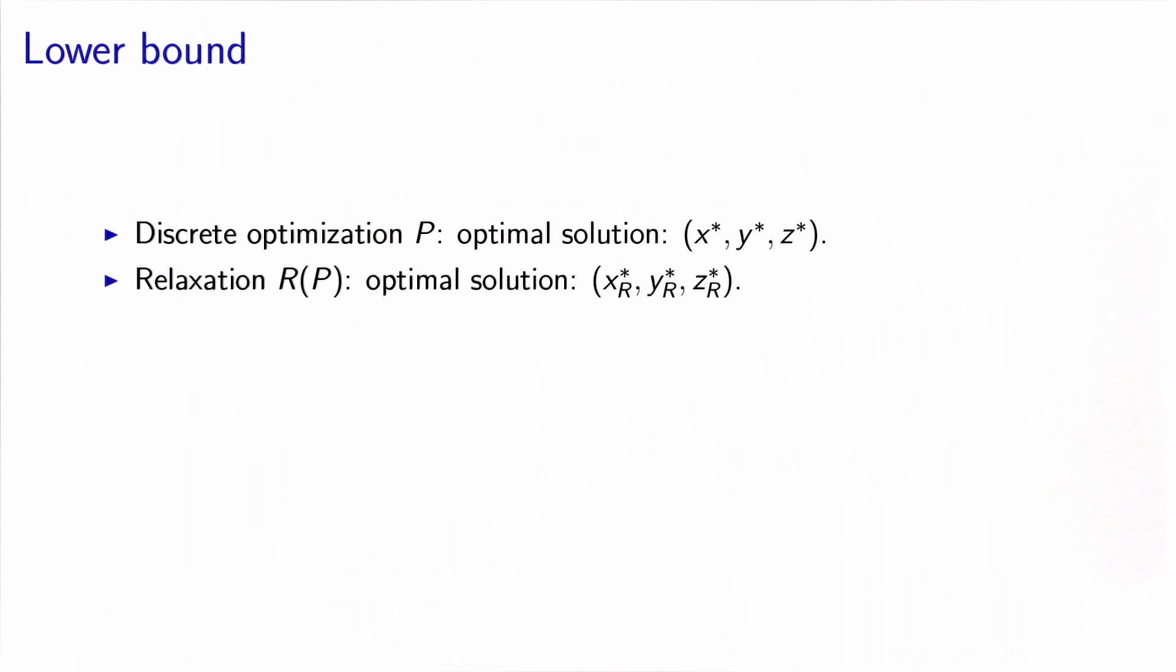The relaxation is extremely useful because it provides us with a lower bound on the optimal solution of the problem. So let's call P our original discrete optimization problem, and let's call x*, y*, z* its optimal solution. We call R(P) the relaxation of the problem, and its optimal solution is x̂*, ŷ*, and ẑ*. And what we know is that the value of the objective function at the optimal solution of the relaxation is a lower bound on the optimal solution of the original problem.